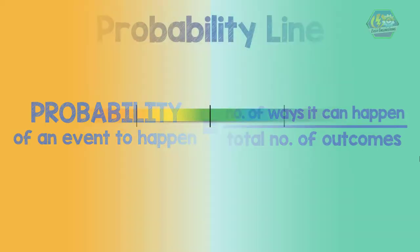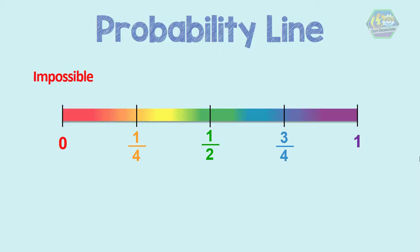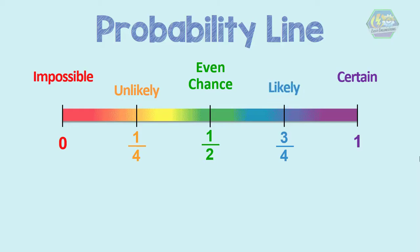The probability line is just like a number line that goes from 0 to 1. A probability of 0 means that the event is impossible to happen, and a probability of 1 means that the event is certain to happen. A probability of 1/2 means there is an even chance that the event will or will not happen. A probability less than 1/2 means the event is unlikely to happen, and a probability greater than 1/2 means the event is more likely to happen.